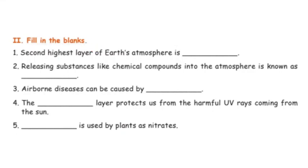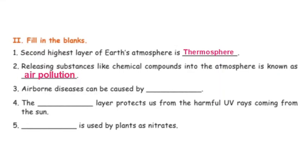Now fill in the blanks. First one: the second highest layer of Earth's atmosphere is thermosphere. The highest is exosphere and the second highest is thermosphere. Second one: releasing substances like chemical compounds into the atmosphere is known as air pollution.